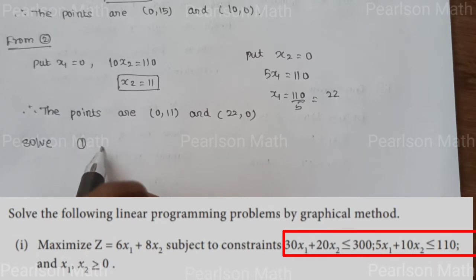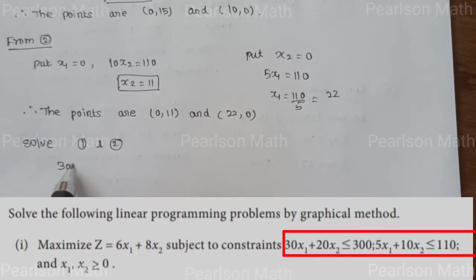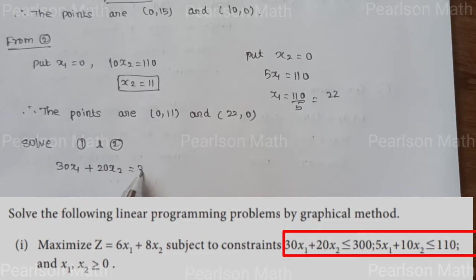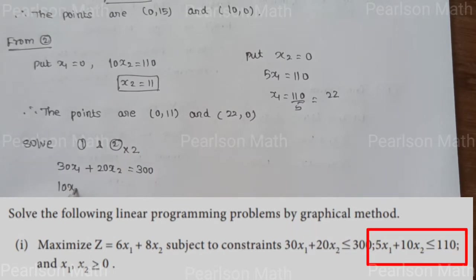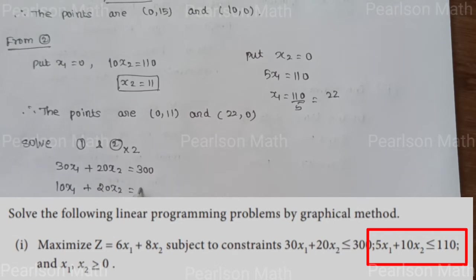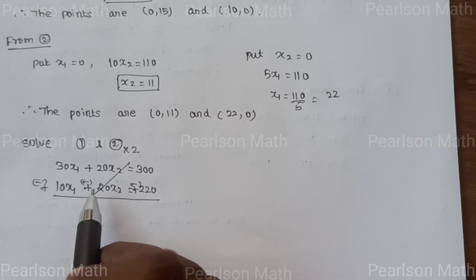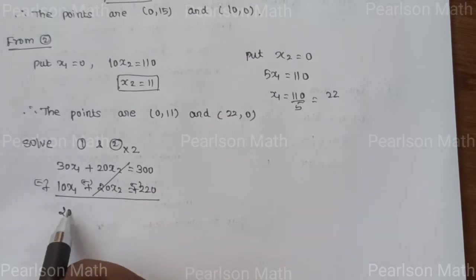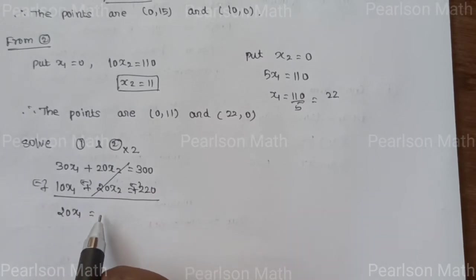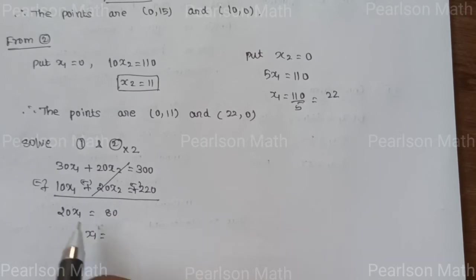Now solve equations 1 and 2. First equation: 30x₁ plus 20x₂ equals 300. Multiply the second equation by 2: 10x₁ plus 20x₂ equals 220. Now change sign and subtract: 20x₁ equals 80.